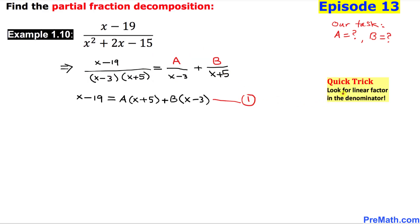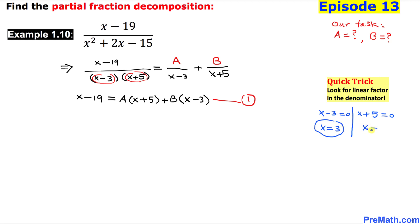Here is our quick trick: look for the linear factors in the denominator. We have x minus 3 and x plus 5. I am going to set both of them equal to 0. That means x equals positive 3 is one of our x values, and x equals negative 5 is the other.